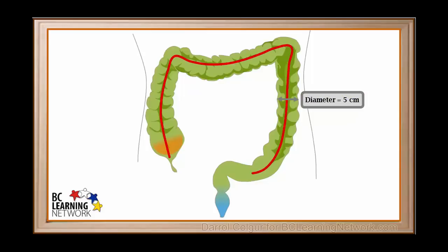And if we were to draw a line through its entire length, it would be approximately 1.5 m. This is a lot shorter than the small intestine, which is about 7 m long.